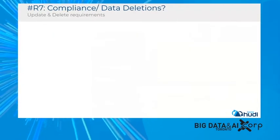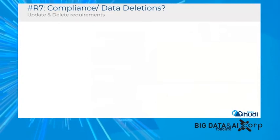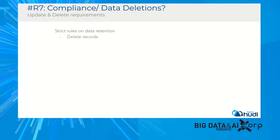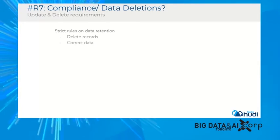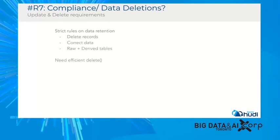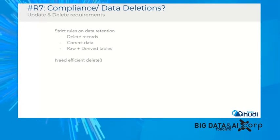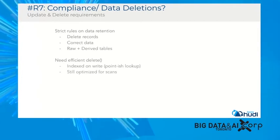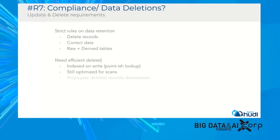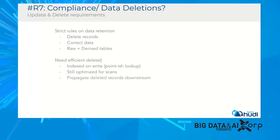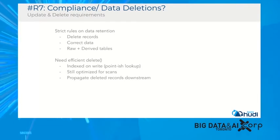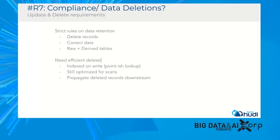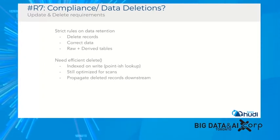The next requirement is around compliance and data deletion. With data being important to everybody, you want strict rules on data retention, the ability to correct data and delete data — everywhere, including derived data. How do you do efficient deletes in petabytes of data where deletes require index lookups, but at the same time you want scan performance on a columnar basis? These goals are quite orthogonal at a fundamental level.